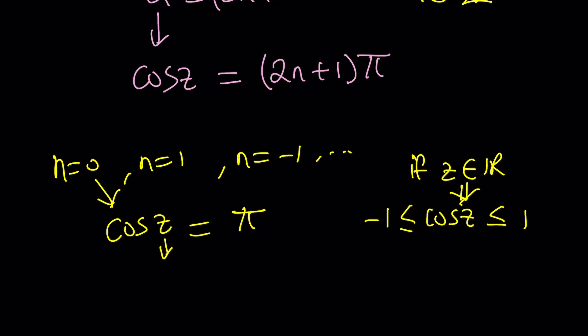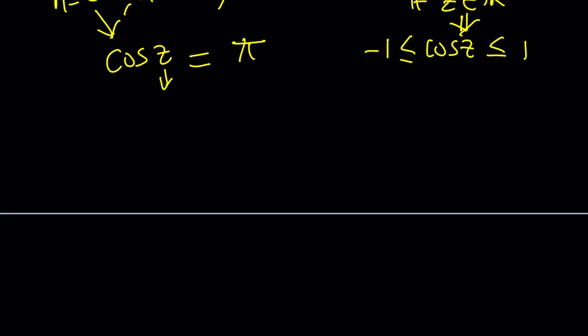Cosine of theta is e to the i theta plus e to the negative i theta divided by 2. Where does that come from? It comes from the following: E to the i theta, thanks to Euler, can be written as cosine theta plus i sine theta. I think this is the most beautiful equation in math. It's just amazing, mind-blowing, spectacular. From here, you're going to replace theta with negative theta, get cosine theta and negative sine theta, add them up, do some algebra, and you're going to end up with this.